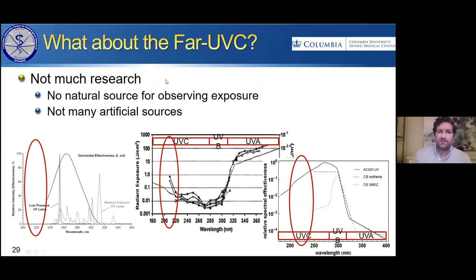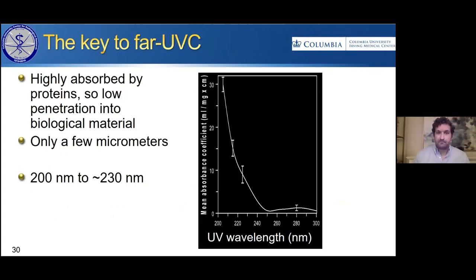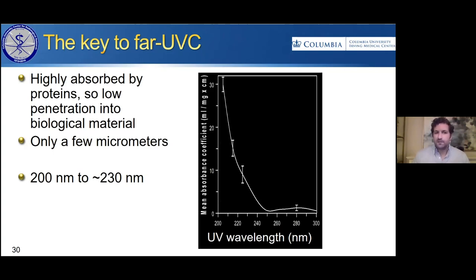What about the far UVC? Most graphs stop with data in the far UVC because there's no natural source — it's all filtered out by the ozone layer — so there isn't much data on what it does to humans. A number of years ago, members of our lab came up with the idea to look at the far UVC, specifically at 200 to about 230 nanometers, to see how well it could inactivate or kill microbes, thinking it might have increased safety because it is highly absorbed by proteins. Because it is so highly absorbed, it can only penetrate a few micrometers into biological material. The graph shows that the far UVC is much more highly absorbed than the rest of the UVC or UVB.